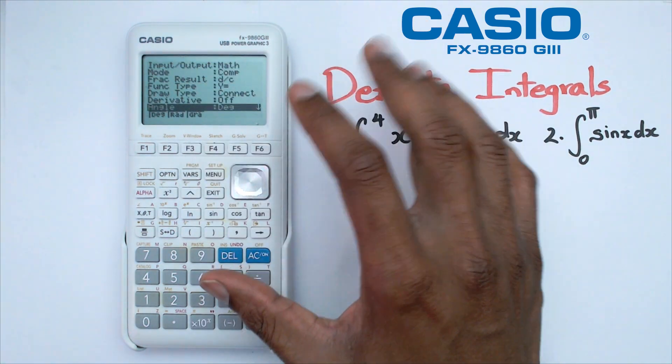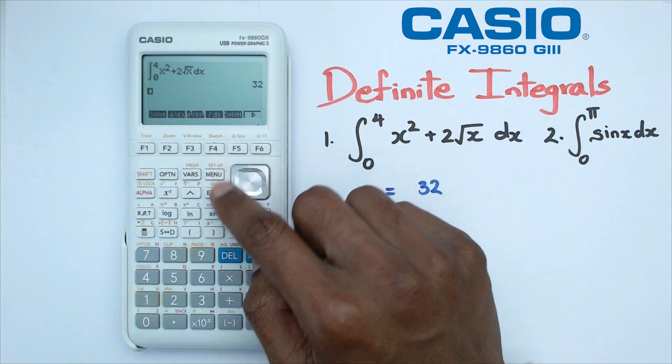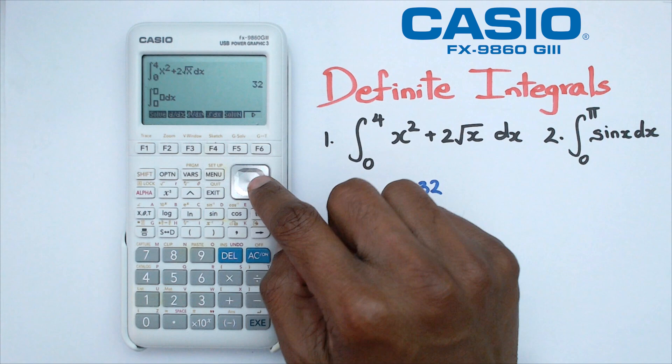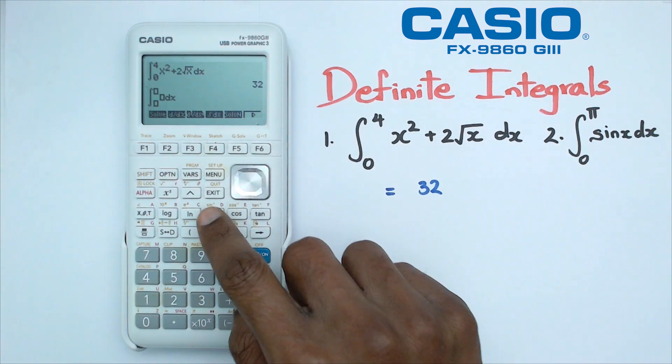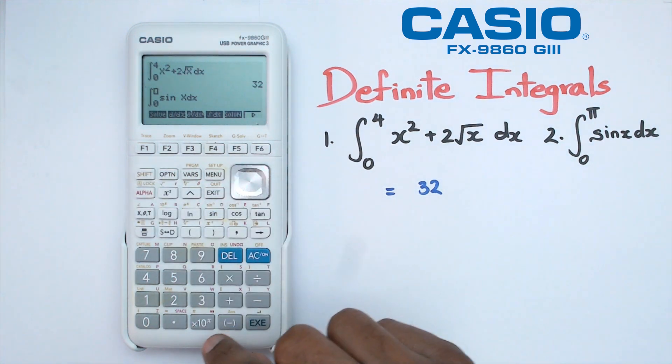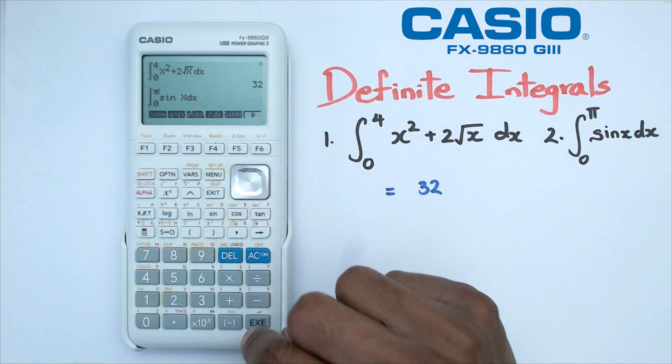I'm going to show you what happens if it's in degrees. Once again, go into option, calc (F4), integral. We'll put in this equation, which is sin x, with lower bound 0 and upper limit π. Once we press equals, we get 0.086.